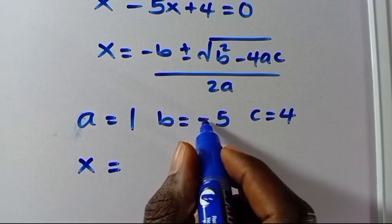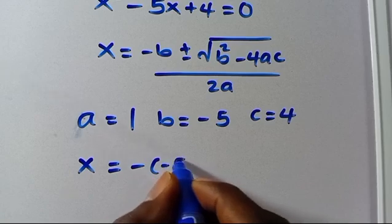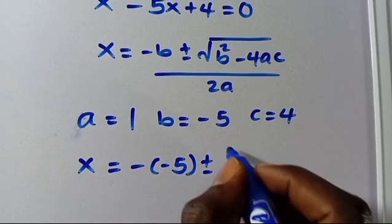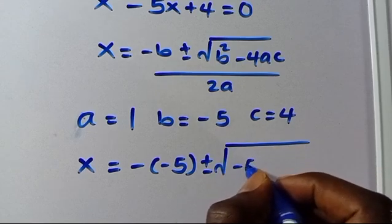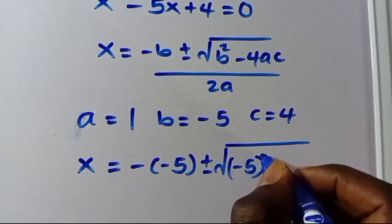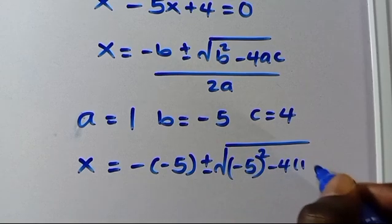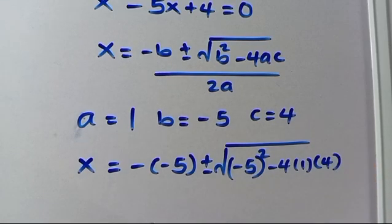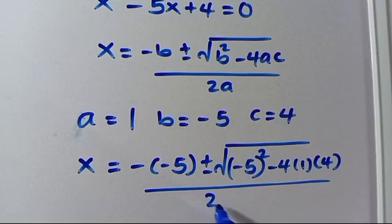So substituting, we have x equals minus times minus 5, plus or minus the square root of (minus 5) squared minus 4 times 1 times 4, all over 2 times 1.